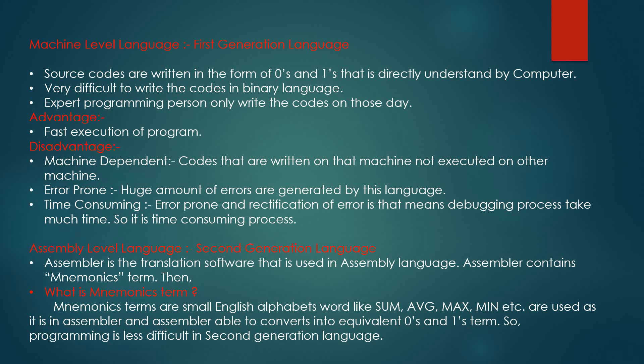First-generation language is typically written in the form of zeros and ones — multiple zeros and multiple ones combinations are used to write the computer program. It is very difficult to write code in binary language, and only a highly skilled person with the deepest knowledge of the entire structure of the computer could write programming in the form of zeros and ones in those days. The advantage of first-generation programming is the fastest execution of the program.